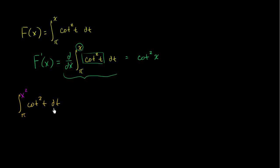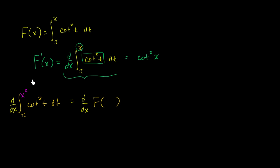And you wanted to take the derivative of this with respect to x. The key recognition here is that capital F of x was defined as the original integral. Now instead of an x in the upper limit, you have an x squared. So this is the exact same thing as taking the derivative with respect to x of capital F of x squared — where we had an x before, we now have an x squared.